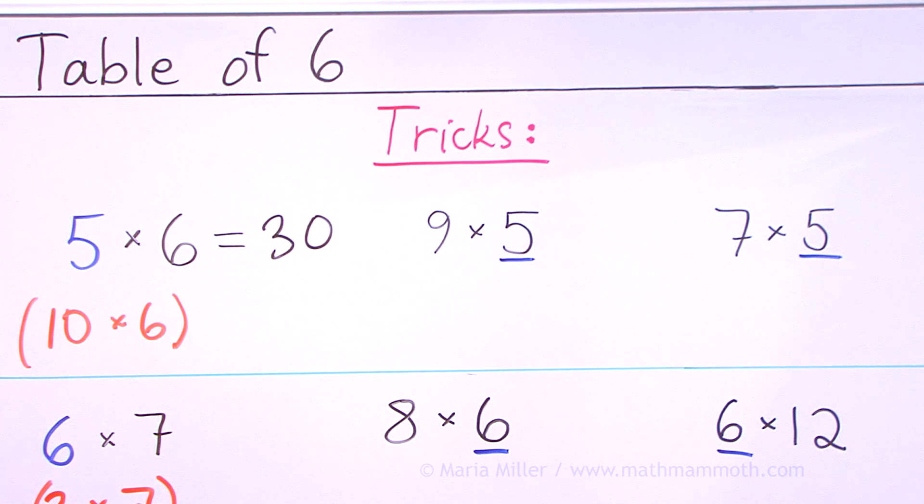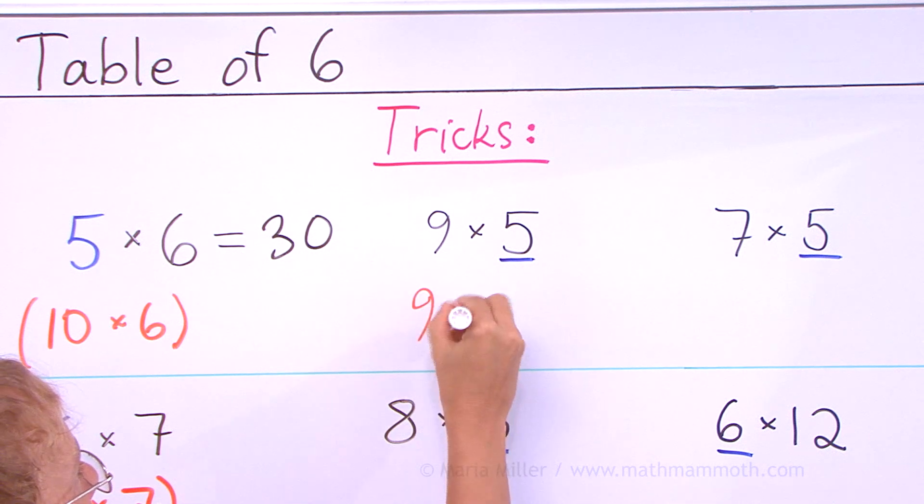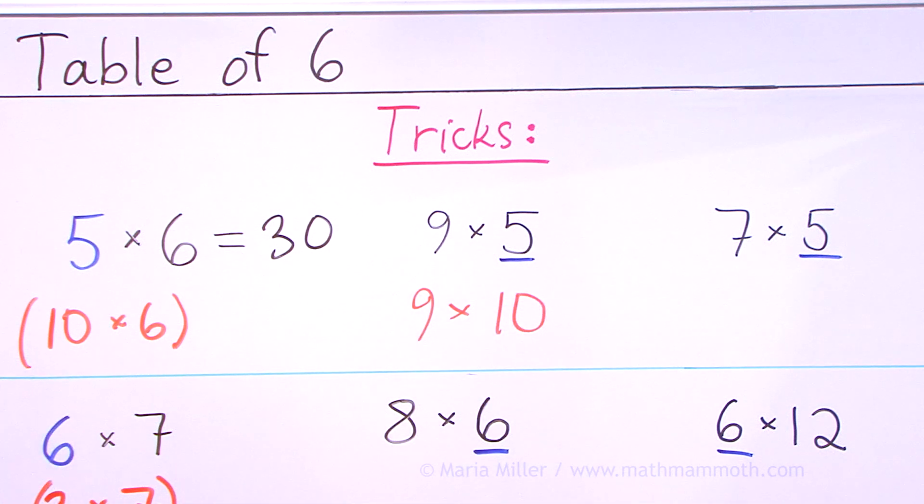9 times 5, what would you think? What would be the helping problem? It would be 9 times 10. That's 90 and half of that, 45.